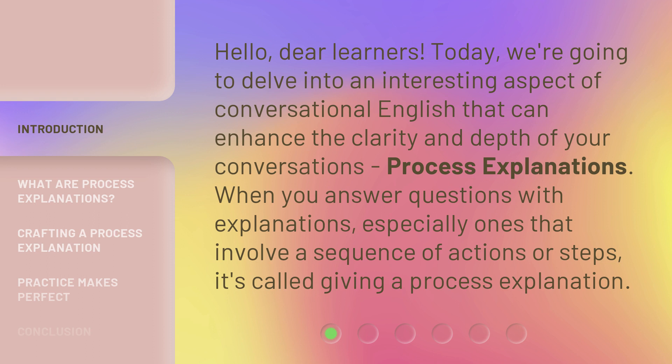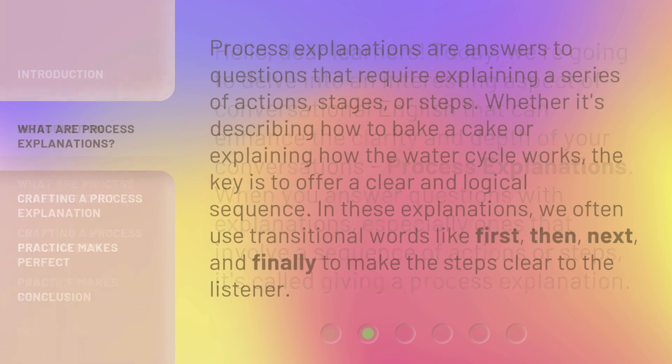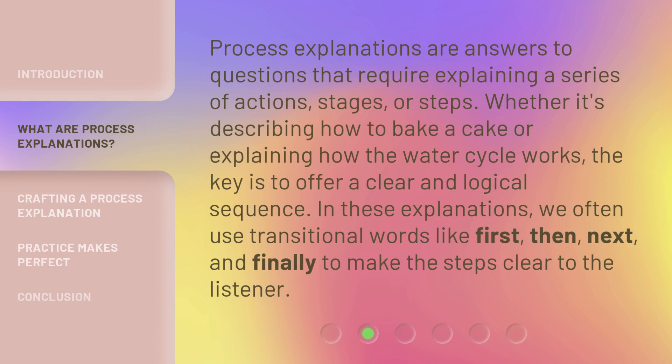When you answer questions with explanations, especially ones that involve a sequence of actions or steps, it's called giving a process explanation. Process explanations are answers to questions that require explaining a series of actions, stages, or steps. Whether it's describing how to bake a cake or explaining how the water cycle works, the key is to offer a clear and logical sequence.